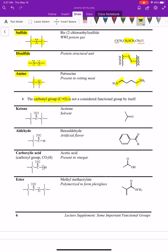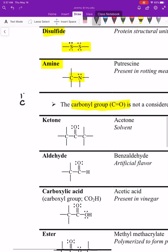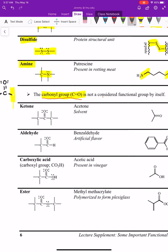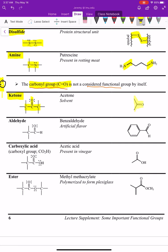The next set of functional groups all contain what's called a carbonyl group — a carbon double bonded to oxygen (C=O). The name of the functional group depends on what the two other groups attached to the carbonyl are. A carbonyl itself is not considered a functional group, but it makes up many of them. A ketone, for example, is when you have a carbonyl with a carbon on both the left and right sides — like acetone, a common solvent.